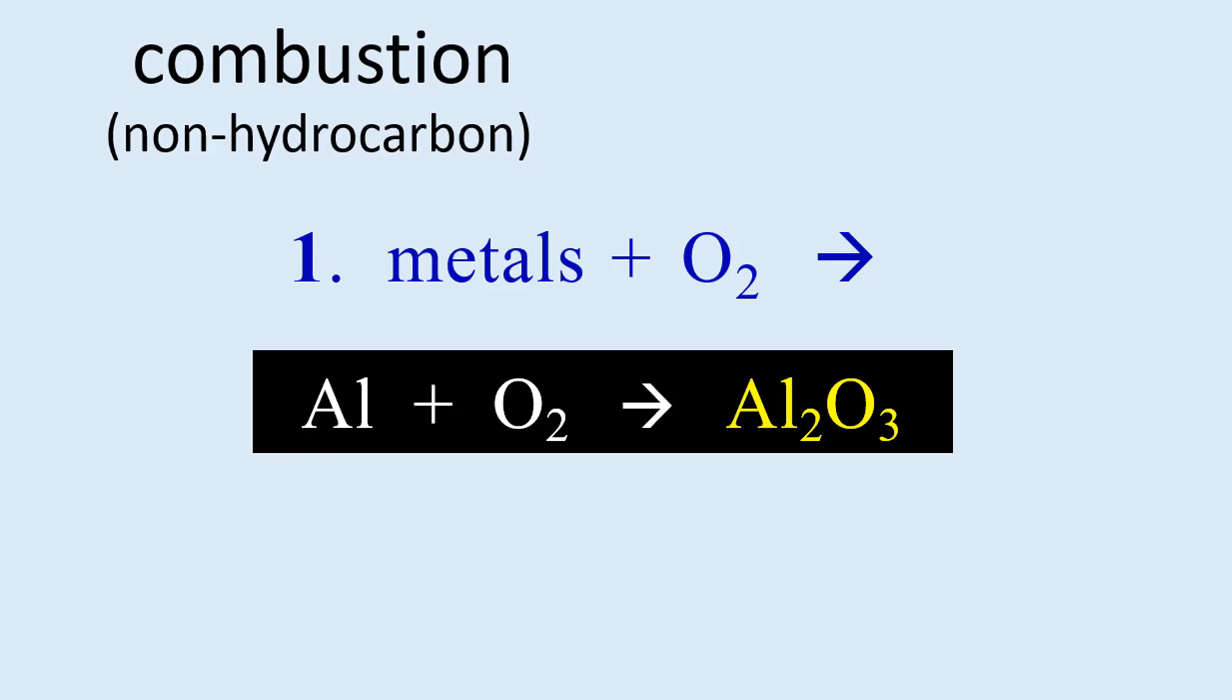The product Al2O3 can be predicted quite readily from the charges occurring on aluminum and oxygen ions, since the product of oxygen in any metal is an ionic compound. Aluminum has a 3+ charge while oxygen is 2-.